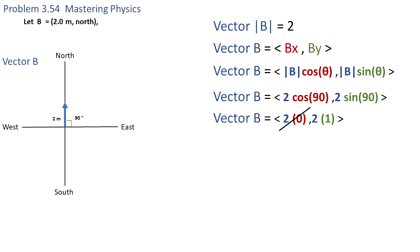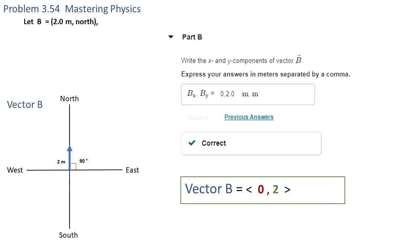We know that cosine of 90 is equal to 0, so the x component is 0, and sine of 90 is equal to 1, so 2 times 1 equals 2. We could say by inspection that the magnitude is 2 and it's completely in the y direction, but using trigonometry we get the same result.